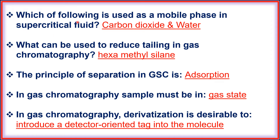Which of the following is used as a mobile phase in supercritical fluid chromatography? Carbon dioxide and water. To reduce tailing in gas chromatography, hexamethylsilane can be used.